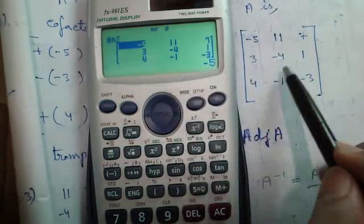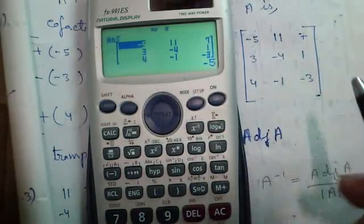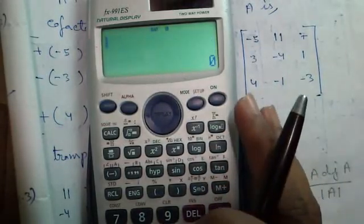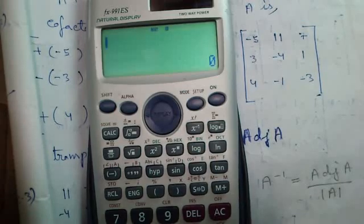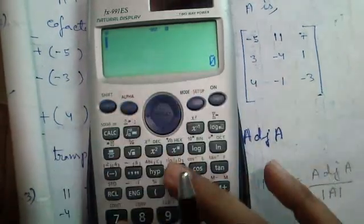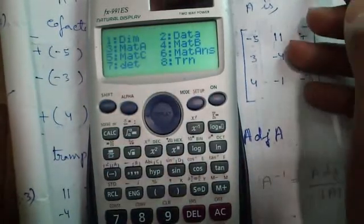Minus 5, 11, 7; 3 minus 4, 1; 4 minus 1, minus 3. So friends this is my tutorial on mode 6 matrix mode of this calculator.